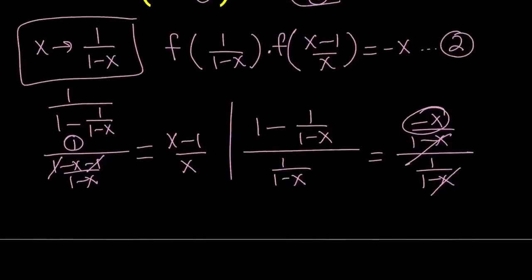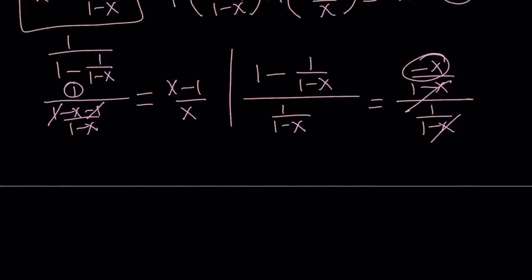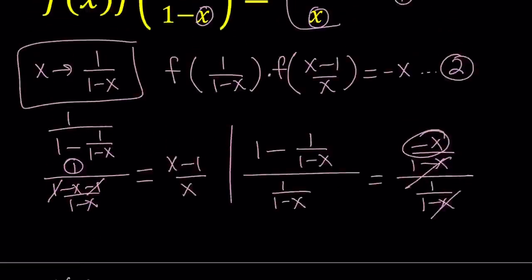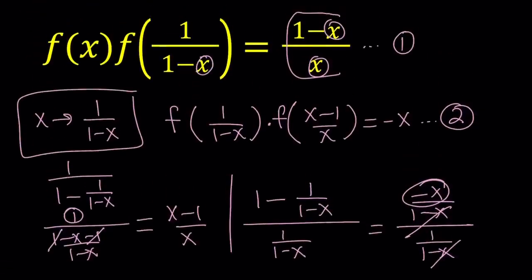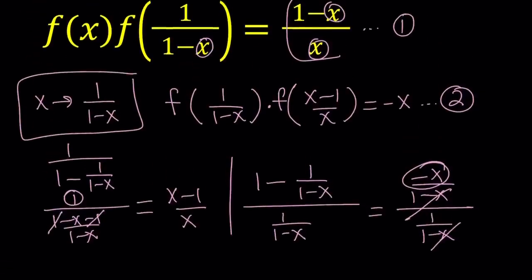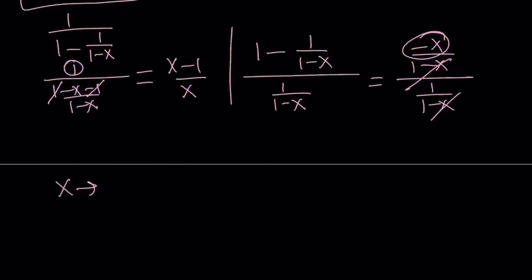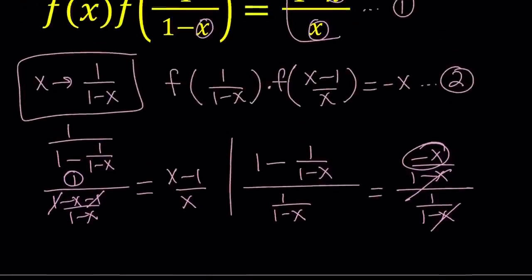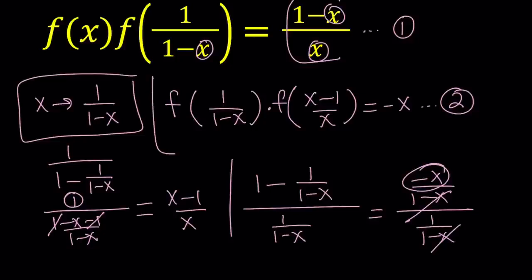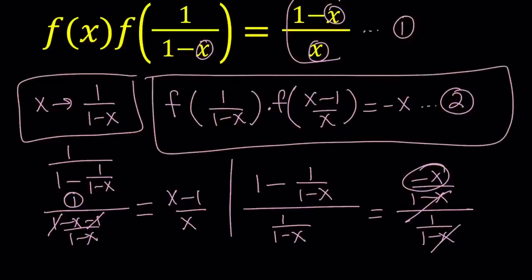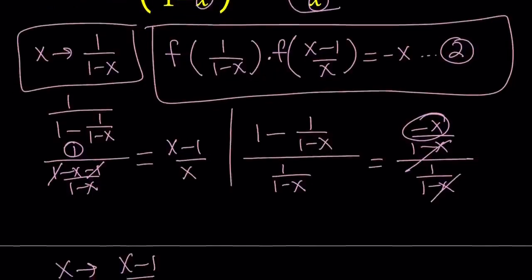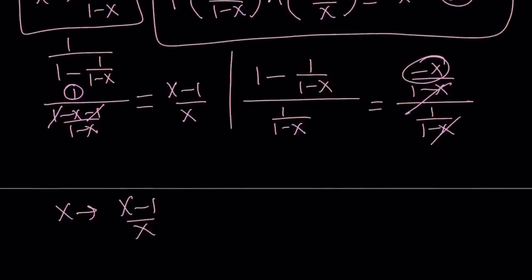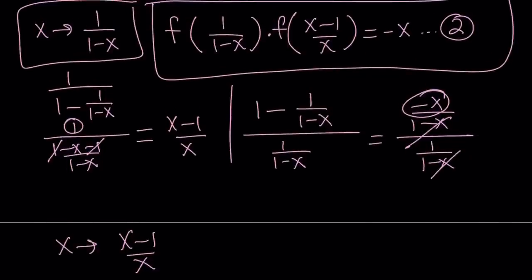The second substitution I'm going to do — always done in the original equation — is replacing x with x minus 1 over x. That depends on the result from equation 2: we got f of x minus 1 over x, so it makes sense to replace x with x minus 1 over x in the original equation.